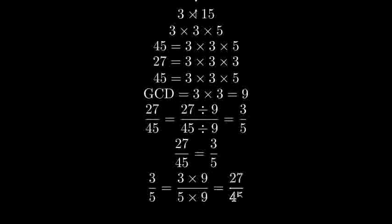To verify our answer, we can multiply both the numerator and denominator of 3 fifths by 9, and we should get back to our original fraction of 27 over 45.